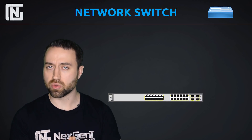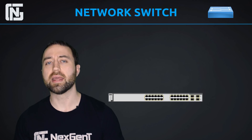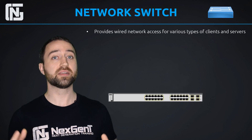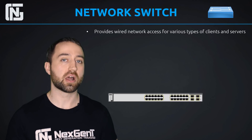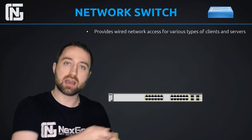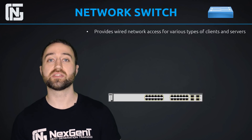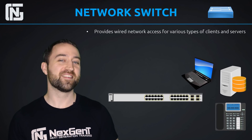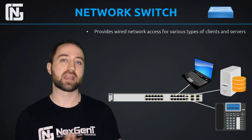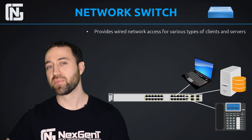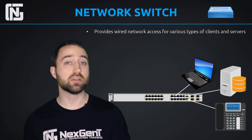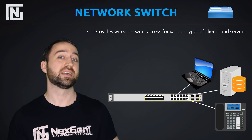A switch provides us with wired network access for our devices — PCs, laptops, phones, wireless access points, printers, and servers all have to get into the network somehow, and the device they plug into is called a switch. The switch provides our network nodes and clients with wired access into the network. They plug in with a cable, like a Cat5 or Cat6 cable, to access the Ethernet network.